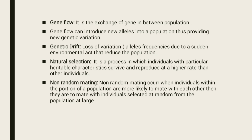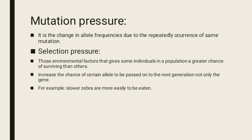Natural selection is a process in which individuals with particular heritable characters survive and reproduce at a higher rate than other individuals. Next is non-random mating, which occurs when individuals within a portion of a population are more likely to mate with each other than with individuals selected at random from the population at large. Next is mutation pressure — the change in allele frequency due to the repeatedly occurring occurrence of the same mutation.